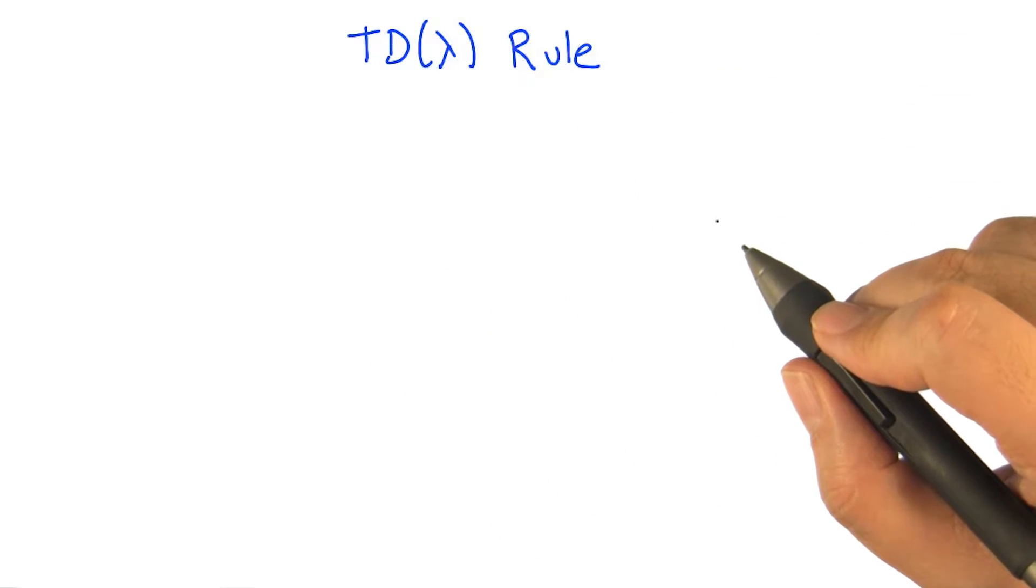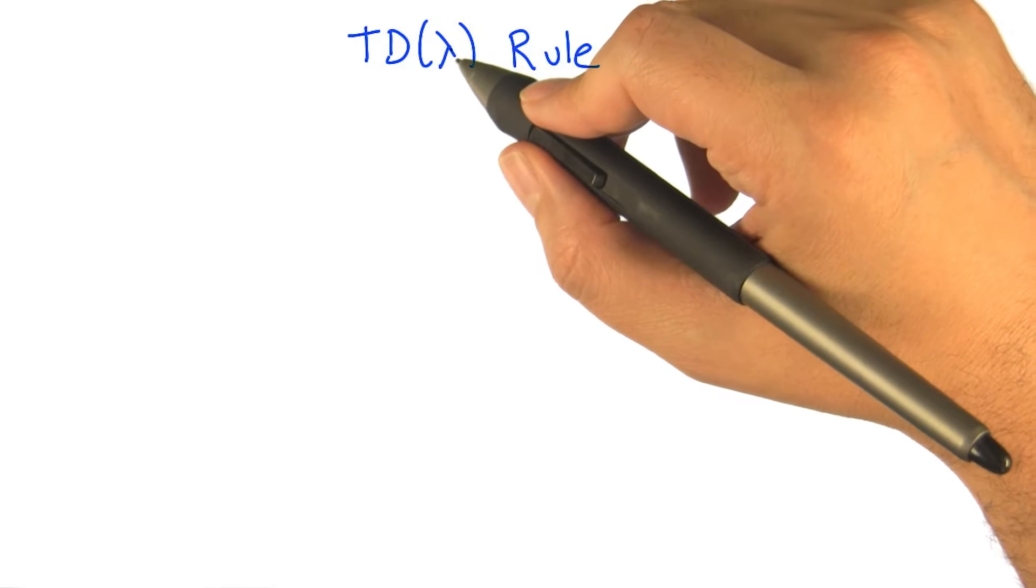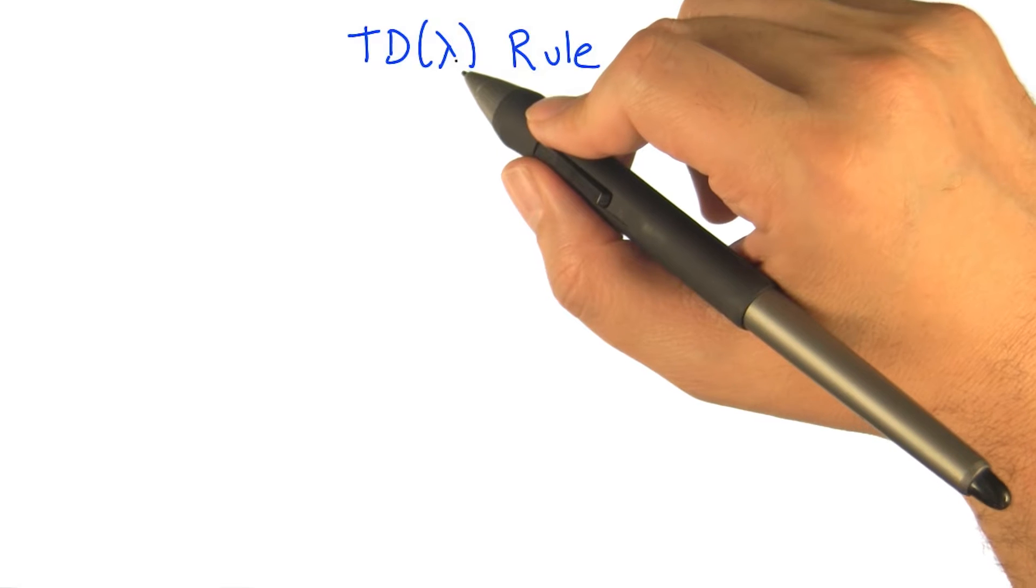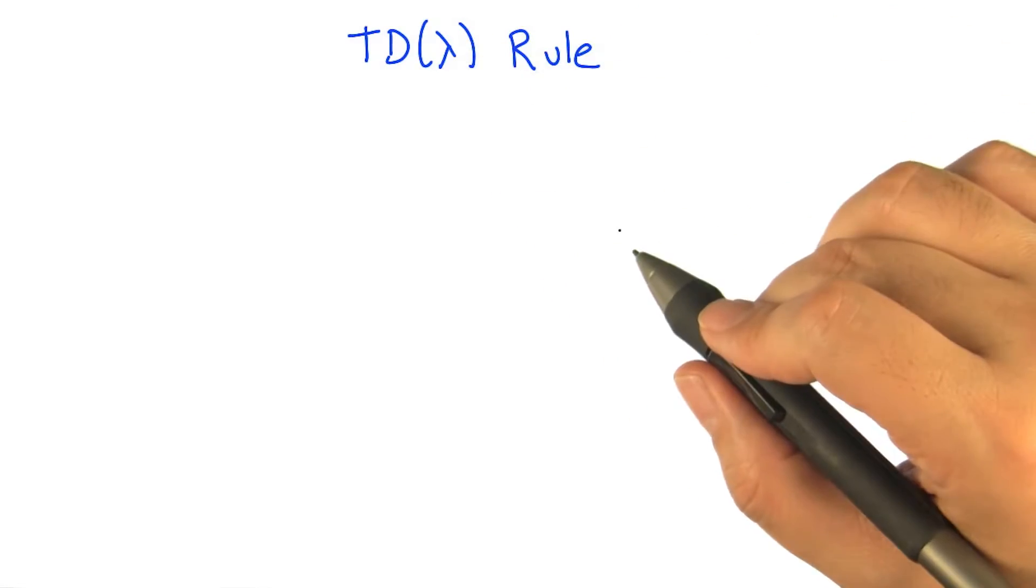And so we're going to write that as TD(λ), and it's going to have the property that when lambda is set to 0, we get TD(0), and when lambda is set to 1, we get TD(1). But we also get update rules for all sorts of in-between values of lambda. I don't know, that sounds kind of like witchcraft to me.